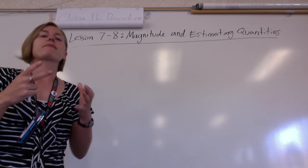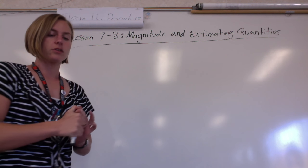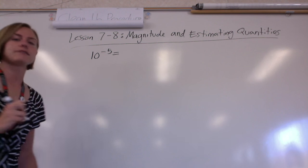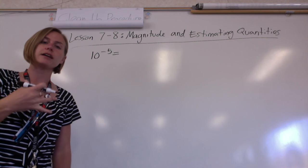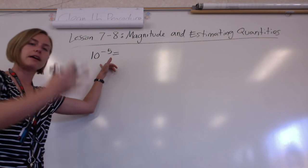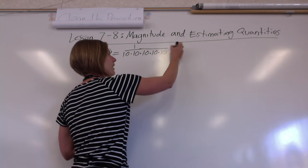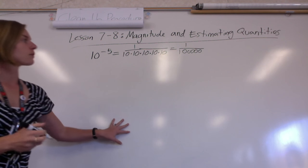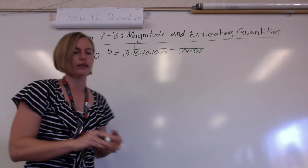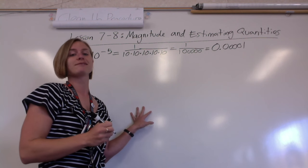We're looking at 10 as our base and then looking at what happens when we have exponents on that. So let's start with 10 to a power of negative 5. We know from our work with exponents that this means I don't actually have five tens on the top, I have five tens on the bottom. So if I multiply that out I'd have 1 over a hundred thousand, which equals 0.00001.